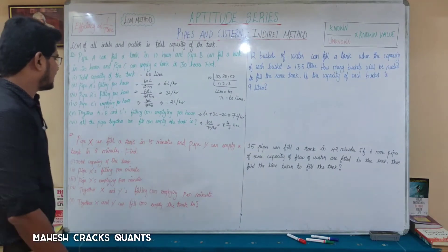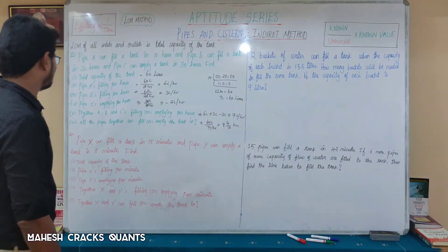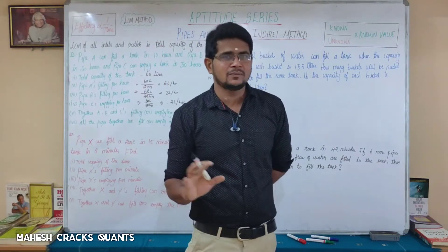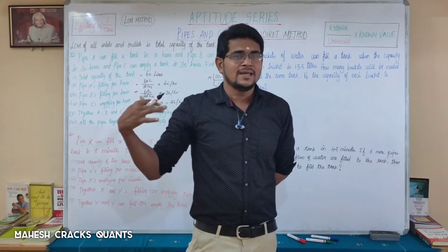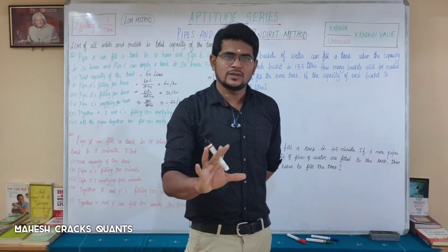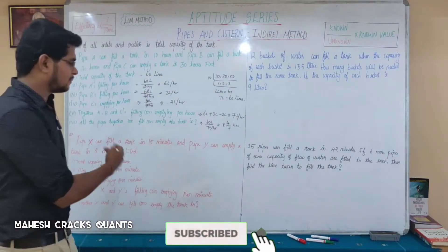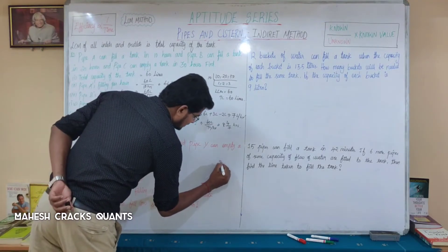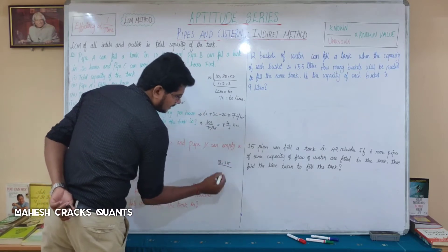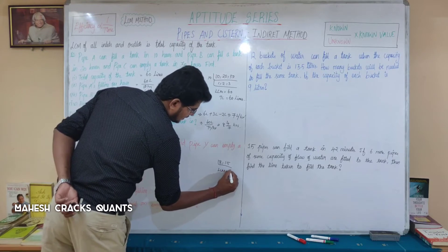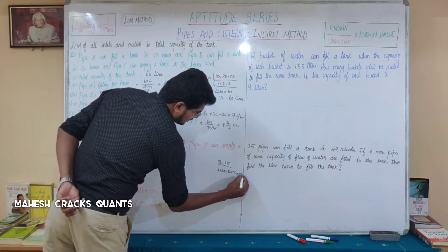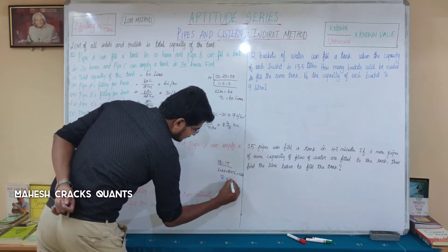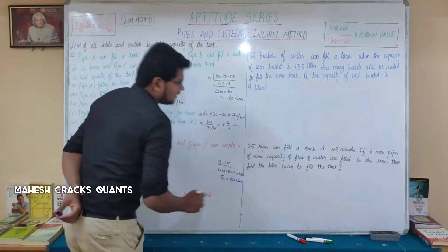Next question: Pipe X can fill the tank in 15 minutes and Pipe Y can empty the tank in 8 minutes. Same kind of question — only the unit changes to minutes. LCM of 8 and 15: they have no common factor, so LCM = 8 × 15 = 120. Total capacity is 120 units.